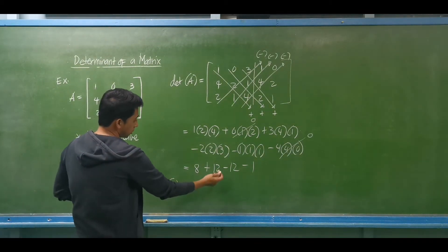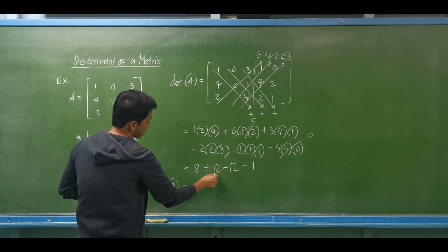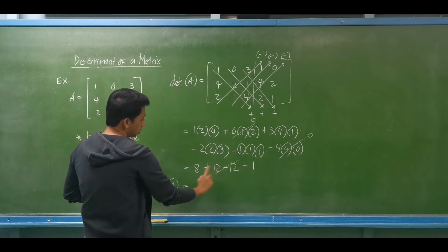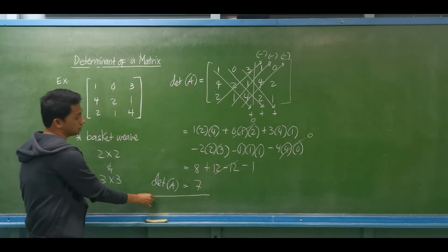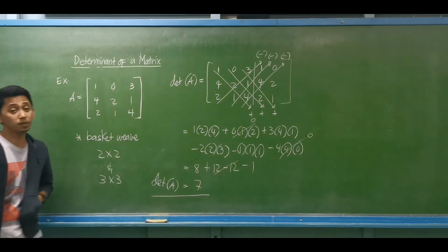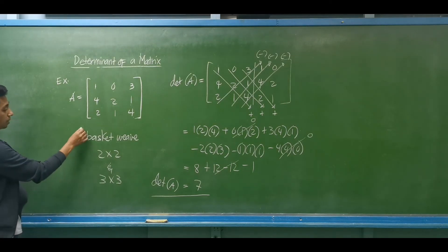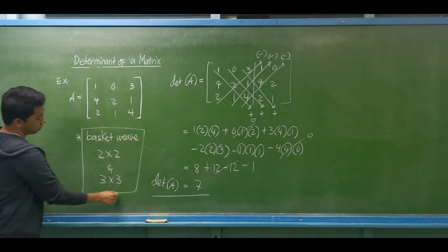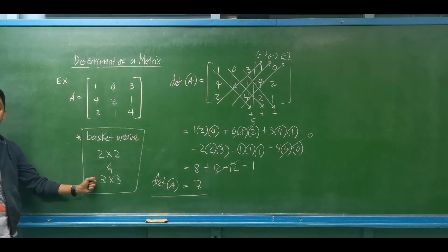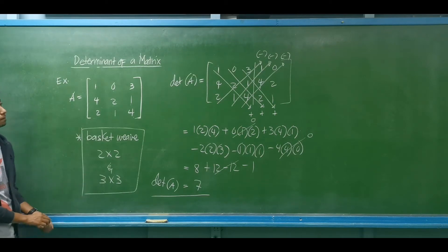So the determinant is 8 plus 0 minus 1, giving us the answer of 7. Again, the basket-weave method is applicable only for a 2 by 2 matrix or a 3 by 3 matrix.